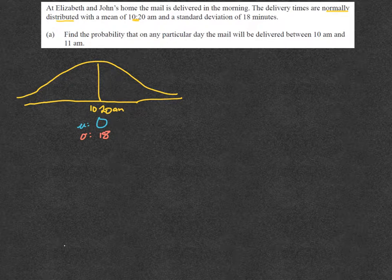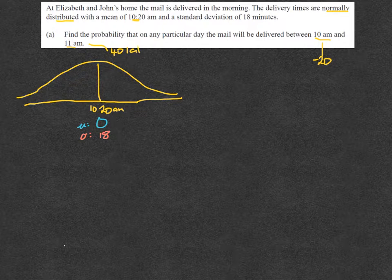What I'd also look at here is that we're trying to find between 10 AM and 11 AM. Now the relationship between 10 AM—well, that's 20 minutes earlier than the mean—and 11 AM is 40 minutes later. So negative 20 and 40.